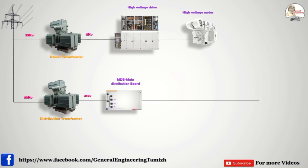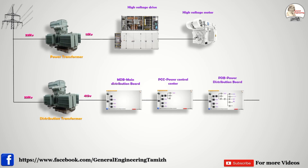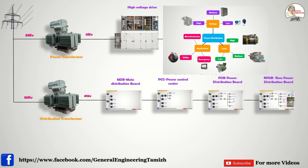From the MDB panel we connect two panels: the Power Control Center (PCC) and the Power Distribution Board (PDB), where medium kilowatt equipments are connected. From PDB we connect the RPDB — the Raw Power Distribution Board — where all single-phase equipments are connected. So voltage-related and kilowatt-related distribution is now complete.